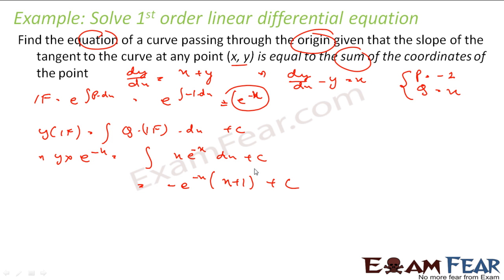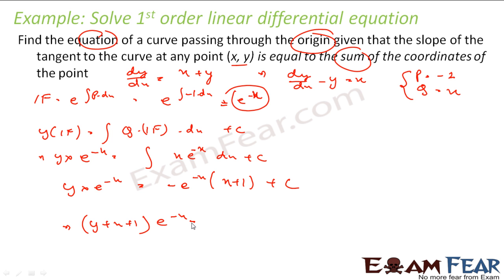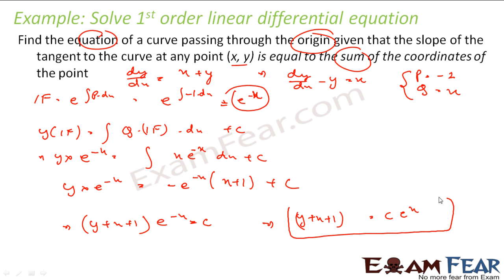If you are having difficulty solving this integral, watch my integral videos — we have many videos on this and you can solve x·e^(−x) very easily. So I got this, and solving gives: y·e^(−x) plus (x + 1)·e^(−x) equals c, or equivalently, y + x + 1 equals c·e^x. That is my answer.